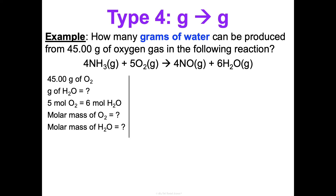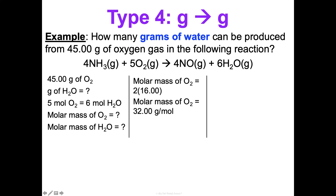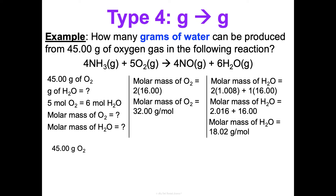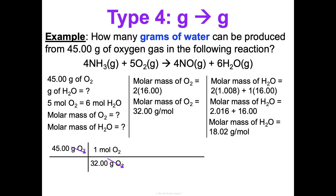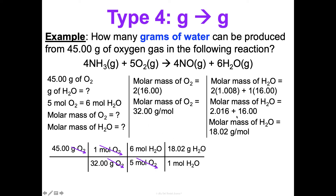Let's start by finding those molar masses. The molar mass of oxygen is two times 16.00, so that's 32.00 grams per mole. The molar mass of water is two times the molar mass of hydrogen plus one times the molar mass of oxygen, giving us 18.02 grams per mole. Now let's do the picket fence. Start with 45.00 grams of oxygen. Use the molar mass: 32.00 grams of oxygen equals one mole of oxygen — those cancel. Then the mole ratio: five moles of oxygen for every six moles of water — those cancel. Then the molar mass of water: one mole of water equals 18.02 grams of water — those cancel. Now I'm left with grams of water, exactly where I wanted to go.